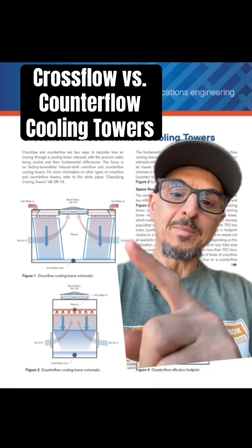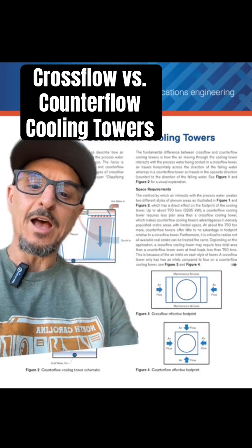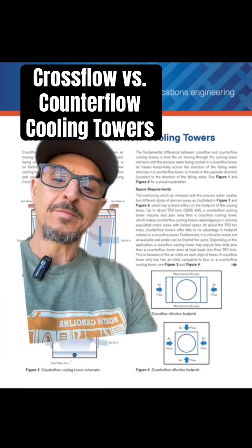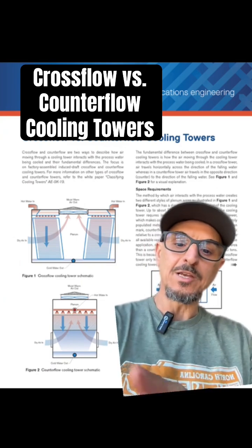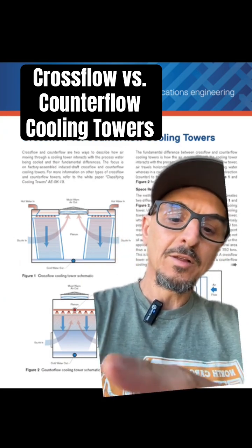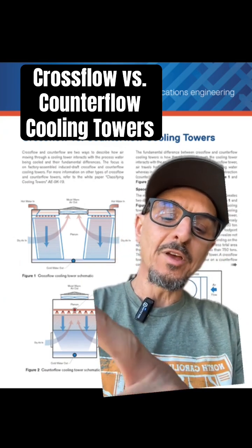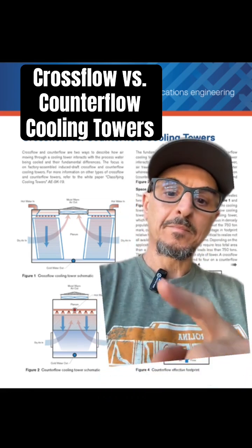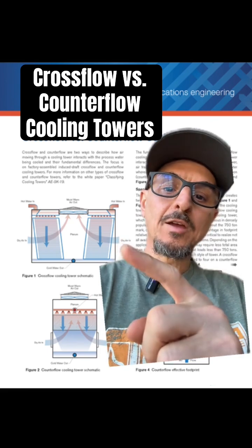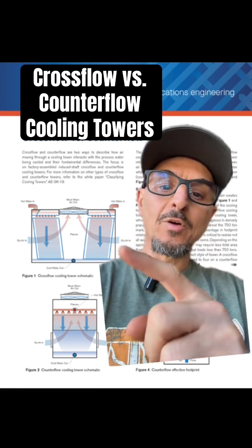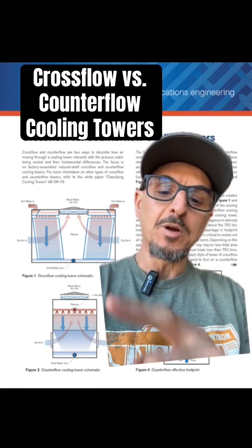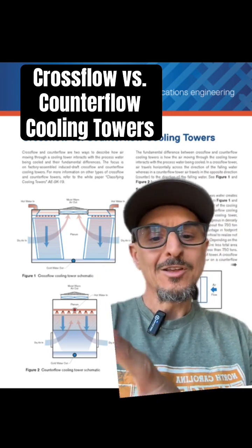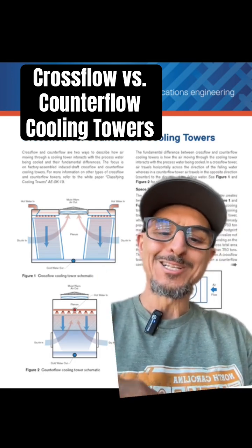In a cross flow application, the air is pulled into the sides of the tower as shown here. In a counter flow application, the air is pulled in through the side, but it comes up through the bottom of the fill. I like to remember this by thinking of cross flow as the air going across the water that's falling — it's perpendicular. And then in the counter flow, the air is going the opposite way, hence the term counter flow.